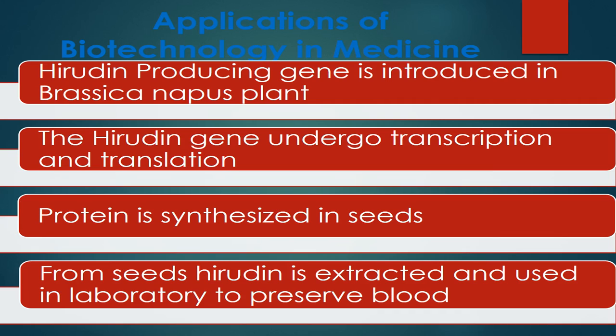In another example, scientists are producing hirudin with the help of rDNA technology by introducing the hirudin gene into the plant Brassica napus. Hirudin is an anti-coagulant naturally present in the saliva of leeches. We use hirudin to preserve blood for longer periods — to prevent coagulation and keep blood usable for 3 to 4 hours before laboratory testing. Scientists isolated the hirudin-producing gene and introduced it into Brassica napus, where it undergoes transcription and translation to produce hirudin.